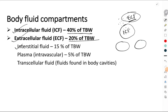Now what we understand by interstitial space is that this is the space which is present in between the cells, and here there is water. This is what is called as the interstitial fluid, which makes up 15% of the total body weight. And the remaining 5% of the total body weight is contributed by the plasma.